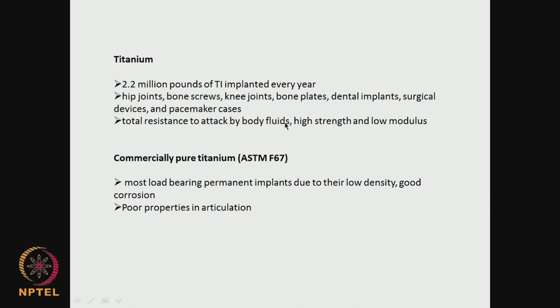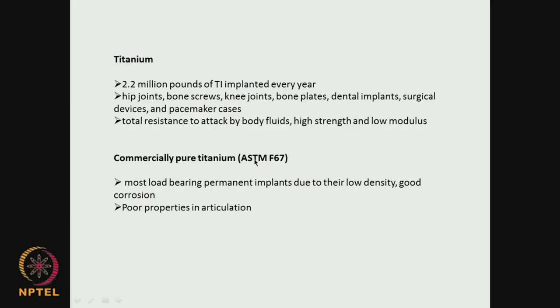The beauty of titanium is its resistance to attack by body fluids. It has very high strength and low modulus, unlike stainless steel which has very high modulus — almost 200 GPa or more — whereas titanium is almost half. But we need to still come down if we want to match the bone, which is about 40 GPa. Titanium alloys are coming down below 100 GPa. There is something called commercially pure titanium — CP titanium. Most load-bearing permanent implants use it because of low density. Its modulus is slowly getting closer to real bone. It has good corrosion properties, but poor properties in articulation — that is the disadvantage. But otherwise, CP titanium has a lot of advantages.